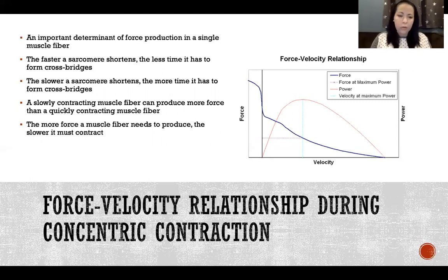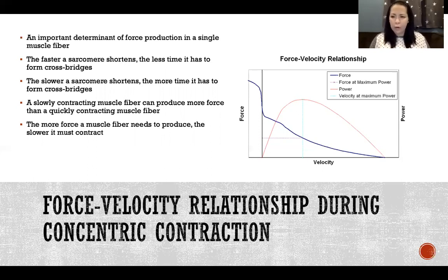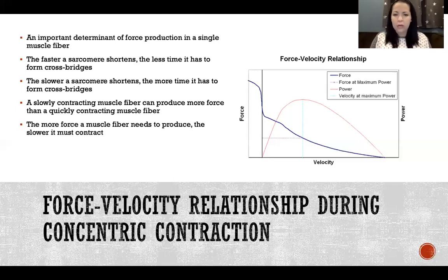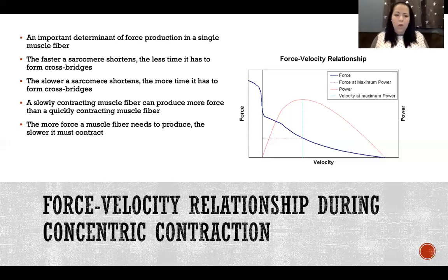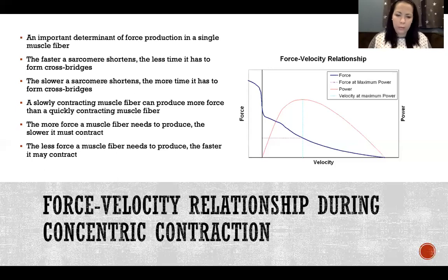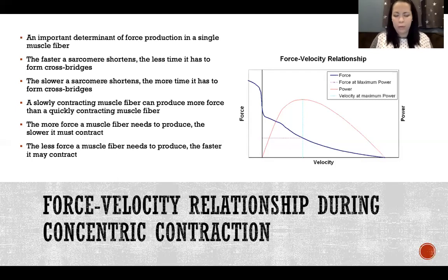We could also look at it the other way: the more force a muscle fiber needs to produce, the slower it must contract. So the slower it contracts, the more force it can produce, but also the more force we need to produce, the slower we must contract. Think about picking up a really heavy box or moving a refrigerator with a friend — you're going to do that by moving slowly, contracting slowly. That's because as we contract slowly, we're able to produce more force than if you tried to pick it up like it was an empty box. The less force a muscle needs to produce, the faster it can contract.